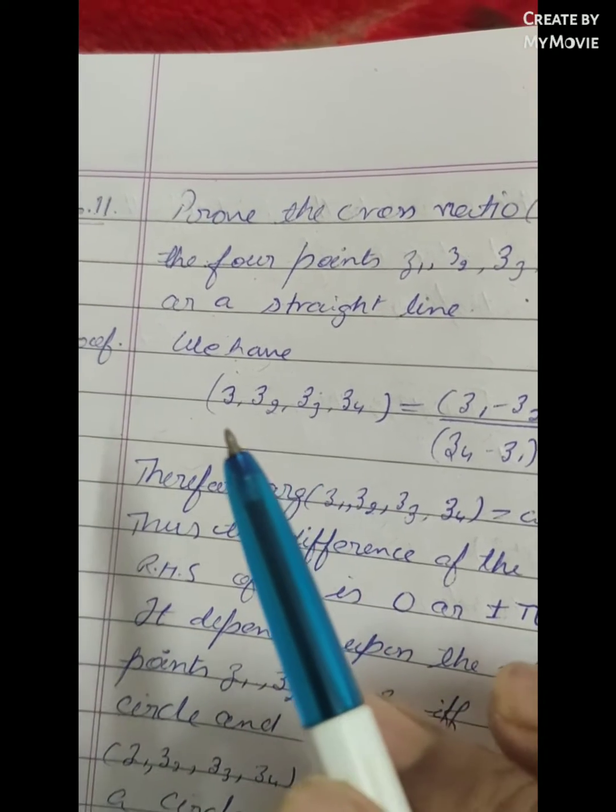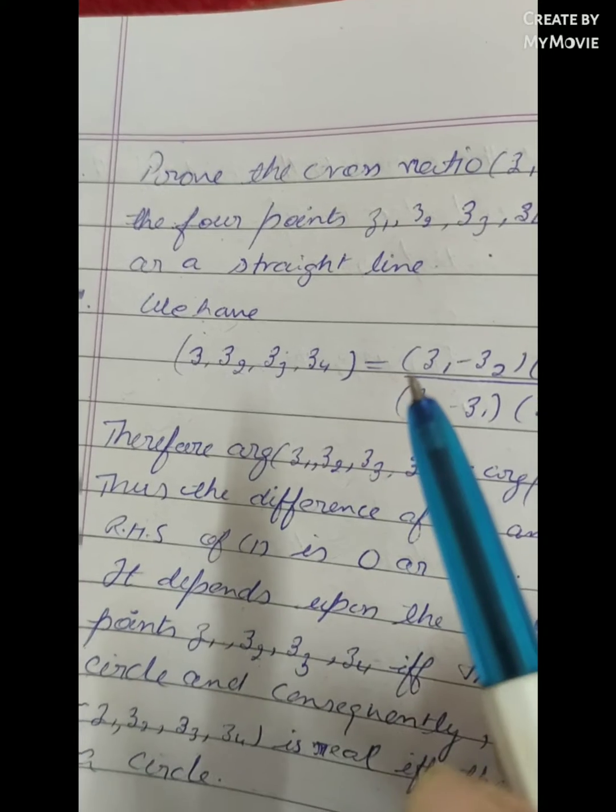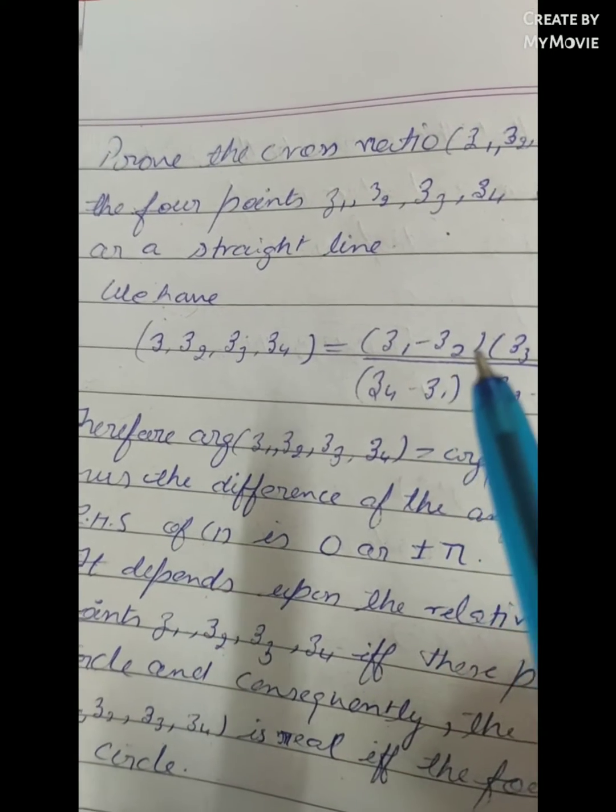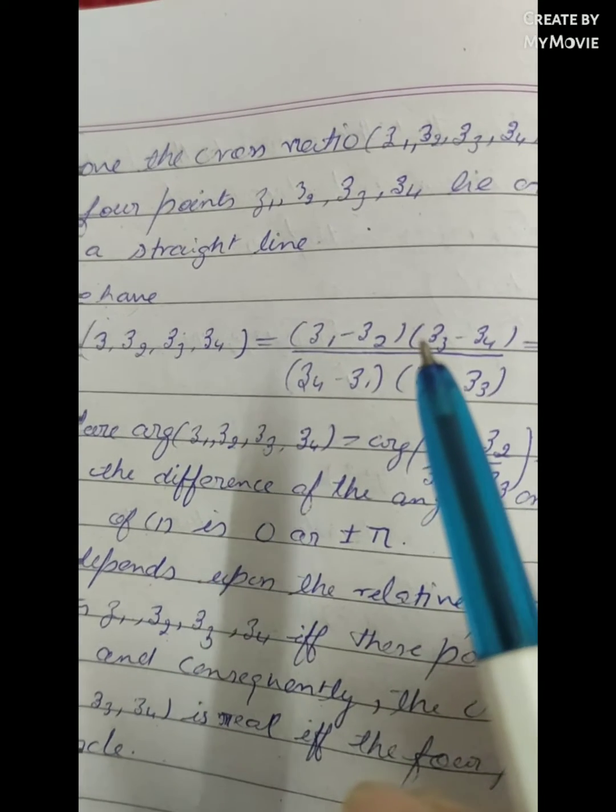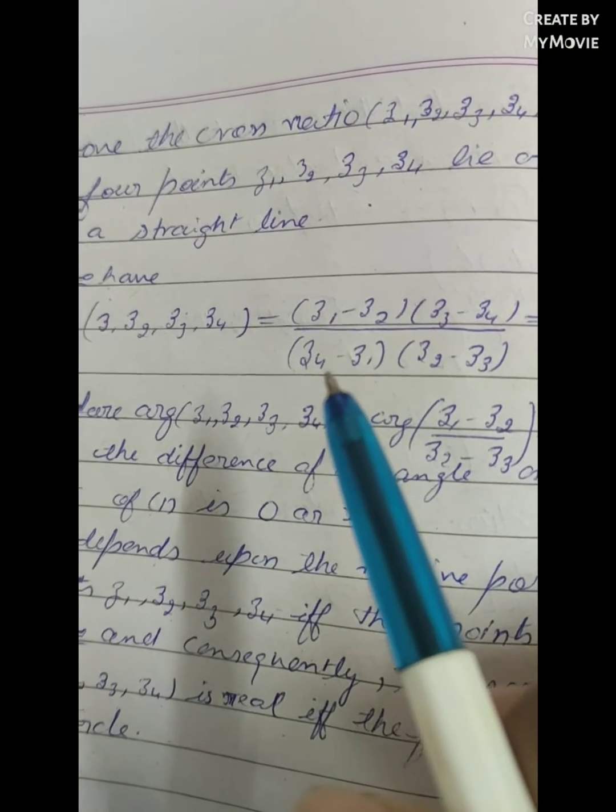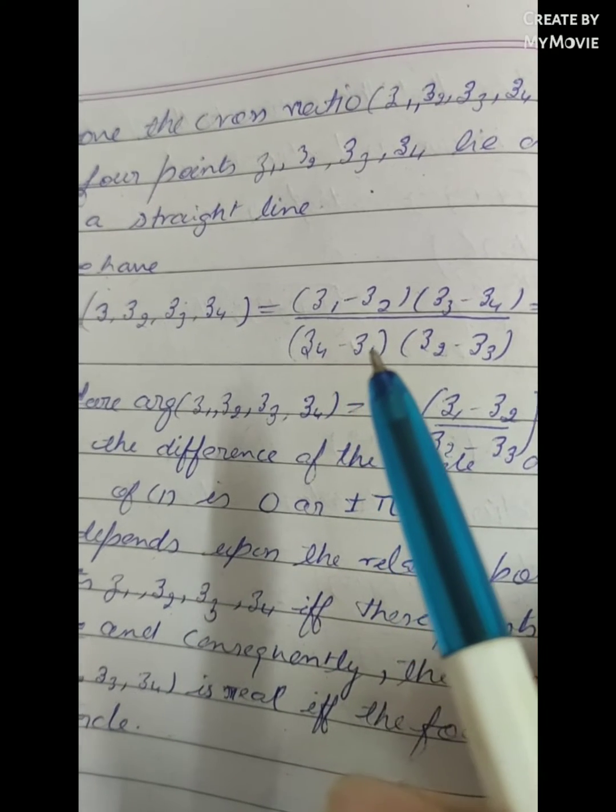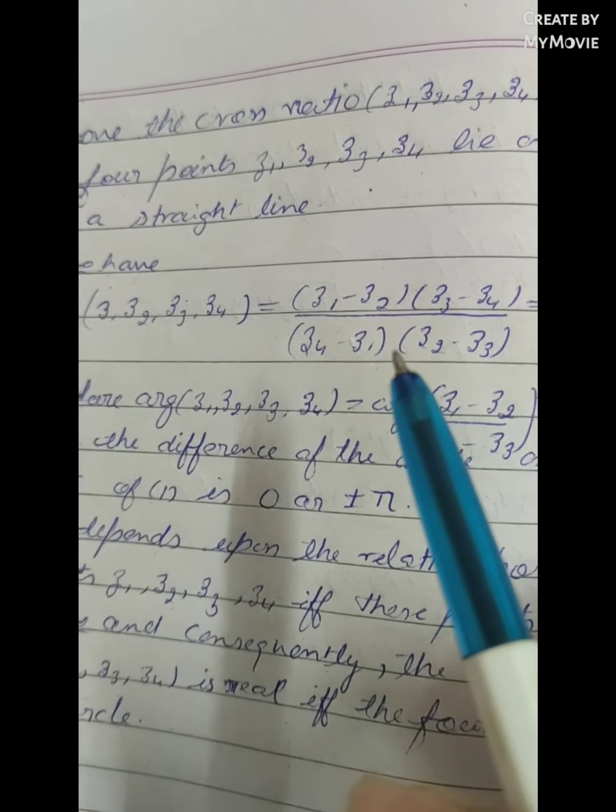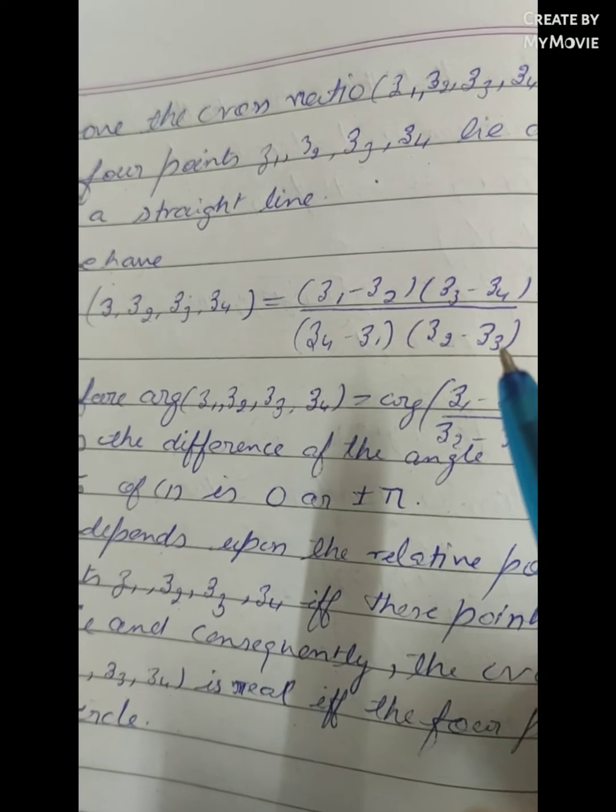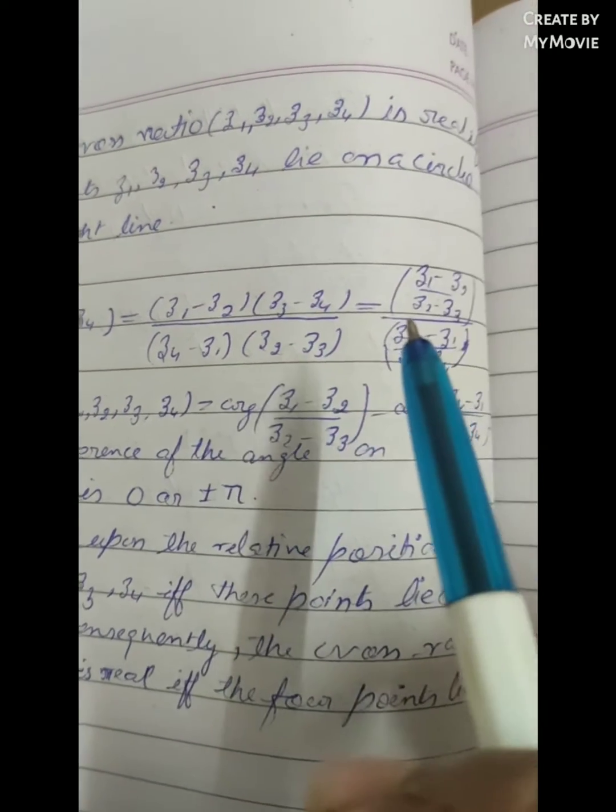Z2, Z3, Z4 is equal to (Z1 minus Z2)(Z3 minus Z4) upon (Z4 minus Z1)(Z2 minus Z3) is equal to